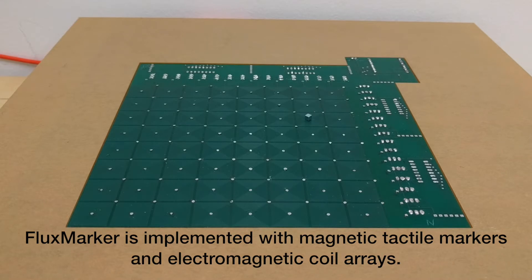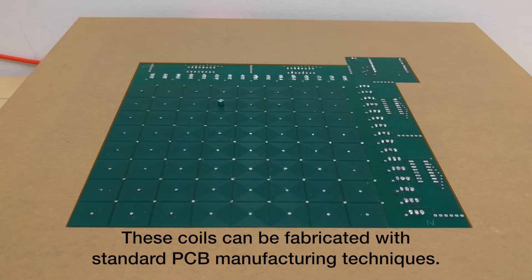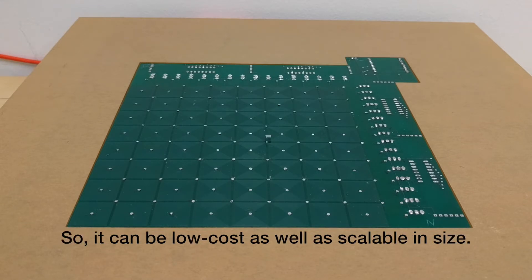FluxMarker is implemented with magnetic tactile markers and electromagnetic coil arrays. These coils can be fabricated with standard PCB manufacturing techniques, so it can be low cost as well as scalable in size.